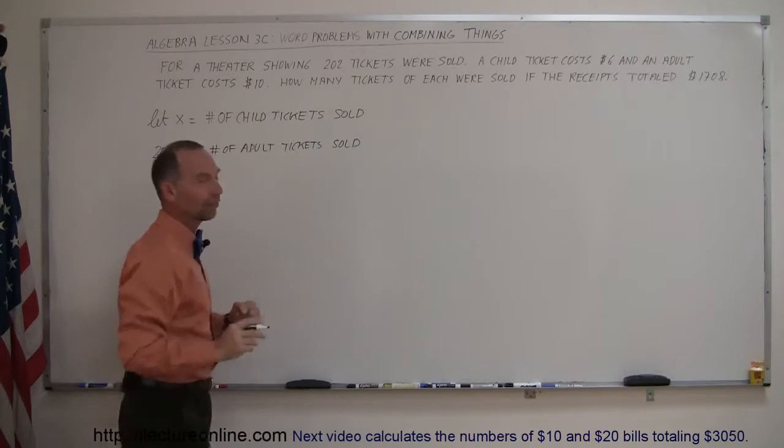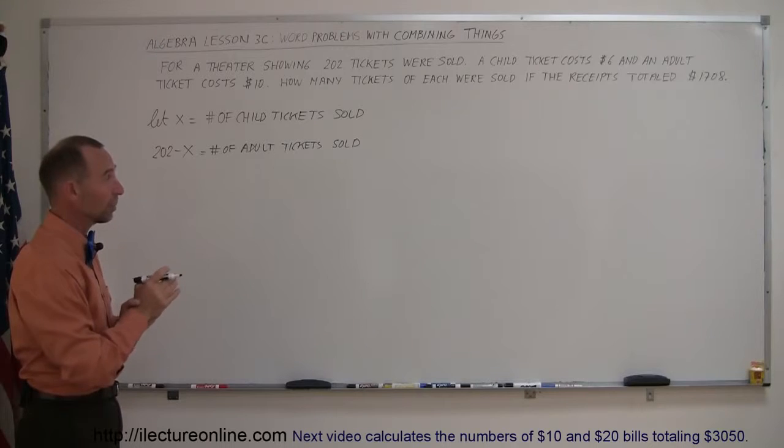All right, now that we have that very well defined, now we can go ahead and come up with an equation to help us solve the problem. We're supposed to find how many of each tickets were sold.